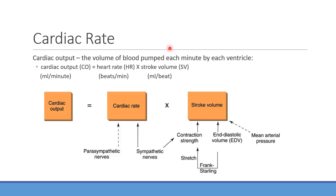The right ventricle mainly supplies blood to the lungs, carrying deoxygenated blood to get oxygenated — we'll cover that in unit five. The left ventricle is the main focus here because it supplies blood to the rest of the body. Cardiac output, usually defined as mL per minute, is determined by two main factors.